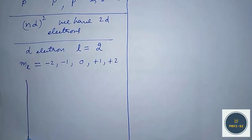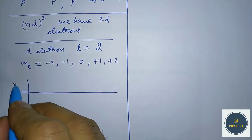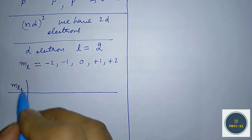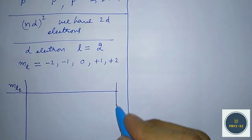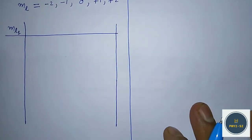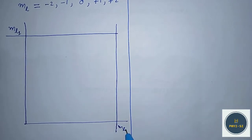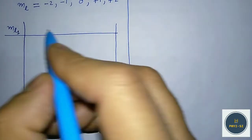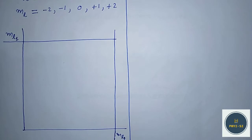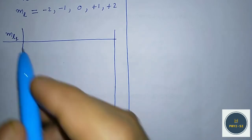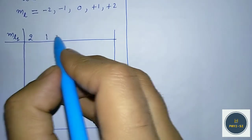We have two electrons, so let us write the ml values for the first electron in one row and the ml values for the second electron in another row. For the first electron we will have the same values, because both electrons are equivalent, so we have the same values of ml. Let us write: 2, 1, 0, −1, −2.